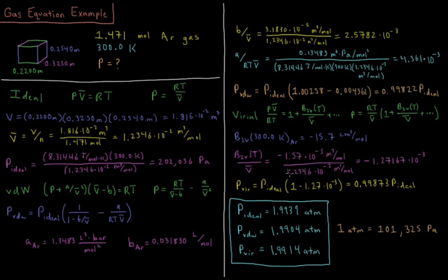Divide that by molar volume, 1.2346 times 10 to the minus 2 meters cubed per mole. 2nd virial coefficient over molar volume gives me minus 1.27167 times 10 to the minus 3. So again, that's a very small perturbation relative to the default value of 1.